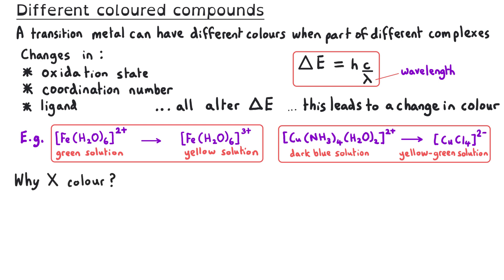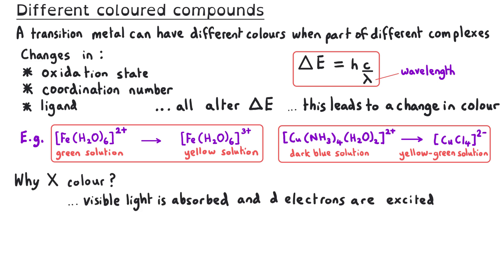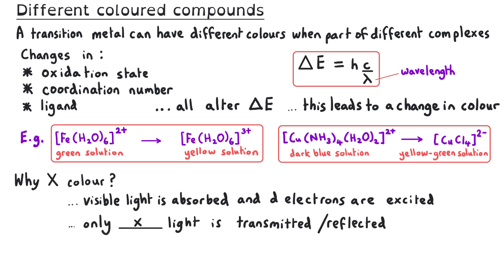A very common exam question would ask you why a particular complex has a particular colour. The standard response is to start by saying that visible light is absorbed when D electrons are excited, and that only a particular colour of light is transmitted or reflected. For instance, why is the hexa aqua iron 2 complex green? You would say that visible light is absorbed and D electrons are excited, and only green light is transmitted or reflected, while the rest of the light is absorbed.